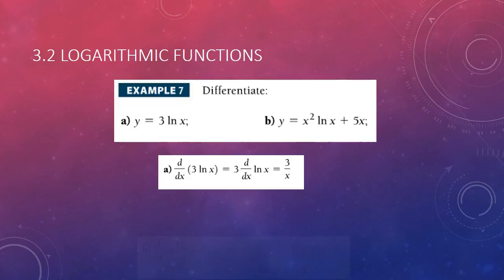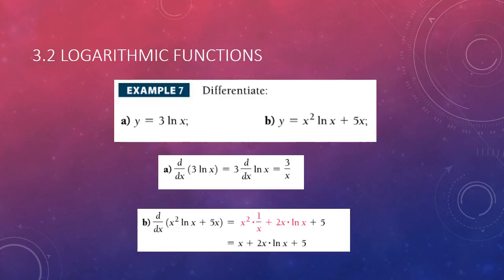For b, we need to do the product rule. So, we're going to do the first times the derivative of the second, that's x squared times 1 over x, plus the derivative of the first times the second, 2x natural log of x, and then the plus 5x, the derivative of that is just 5. So, we have x plus 2x natural log of x plus 5.